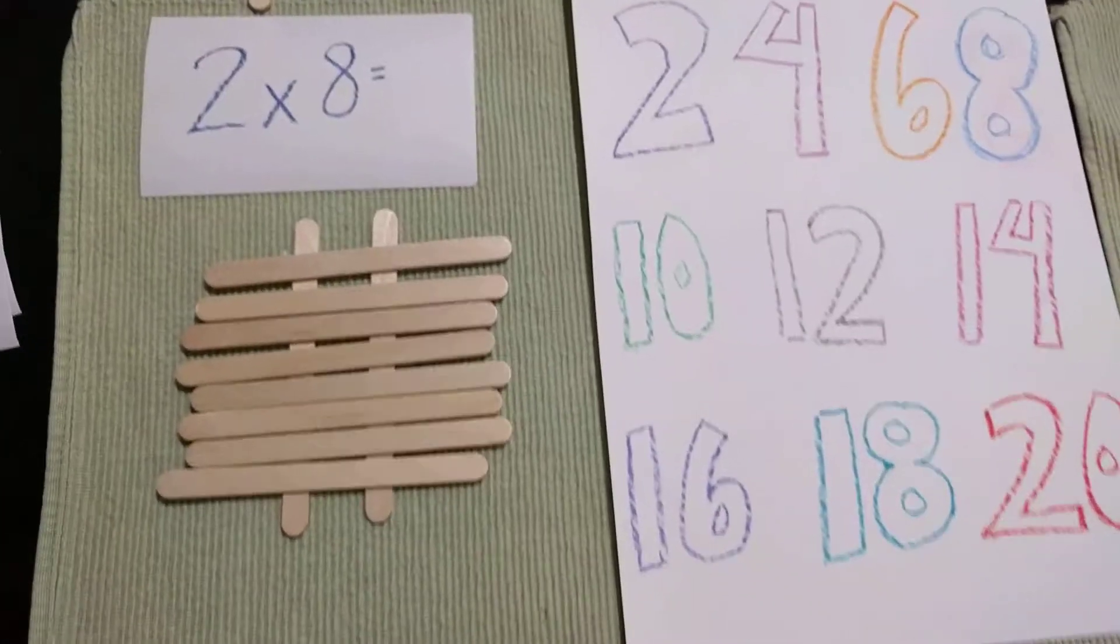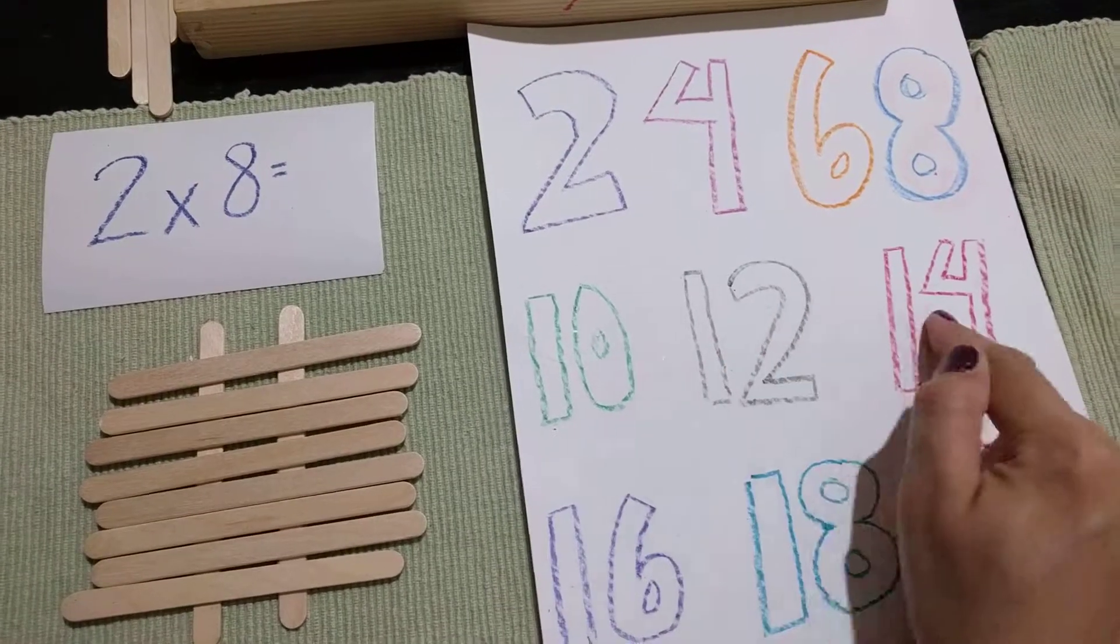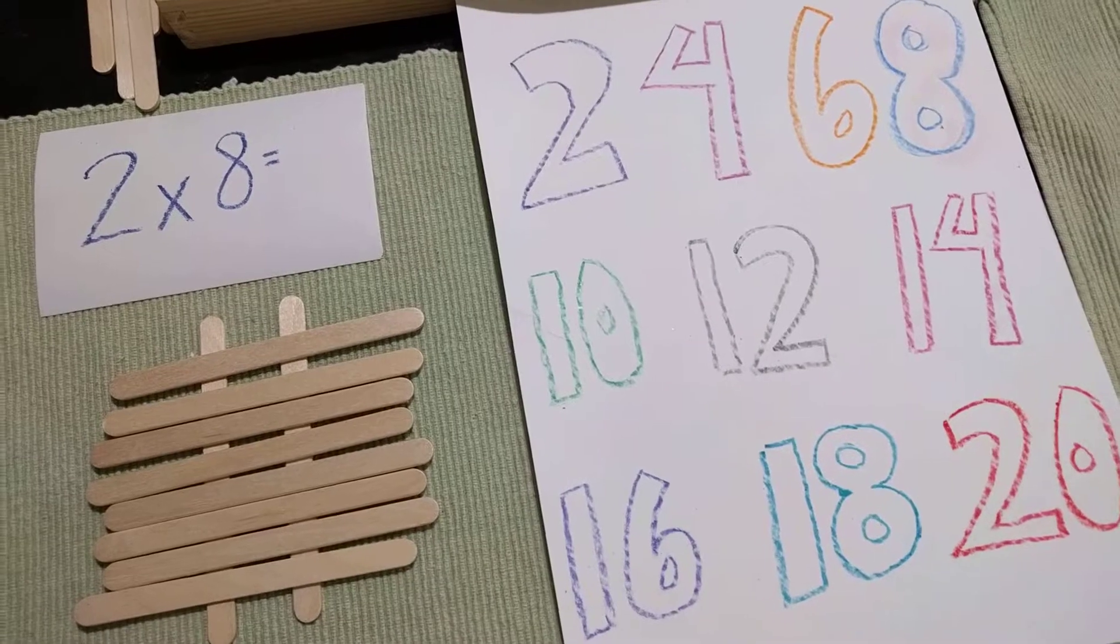2 times 8. Let's see over here. 1, 2, 3, 4, 5, 6, 7, 8. Yes. 2 times 8 is 16.